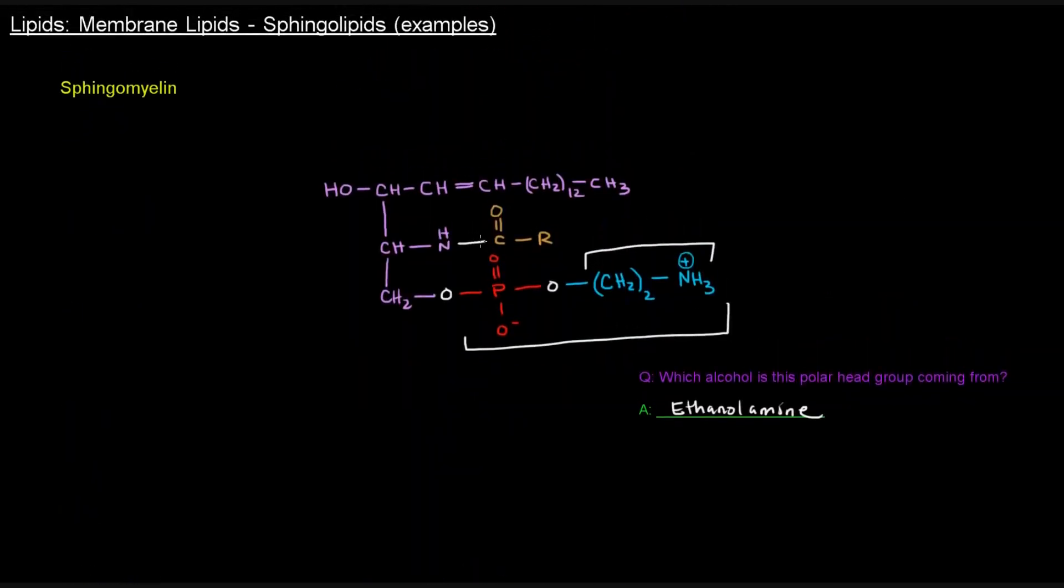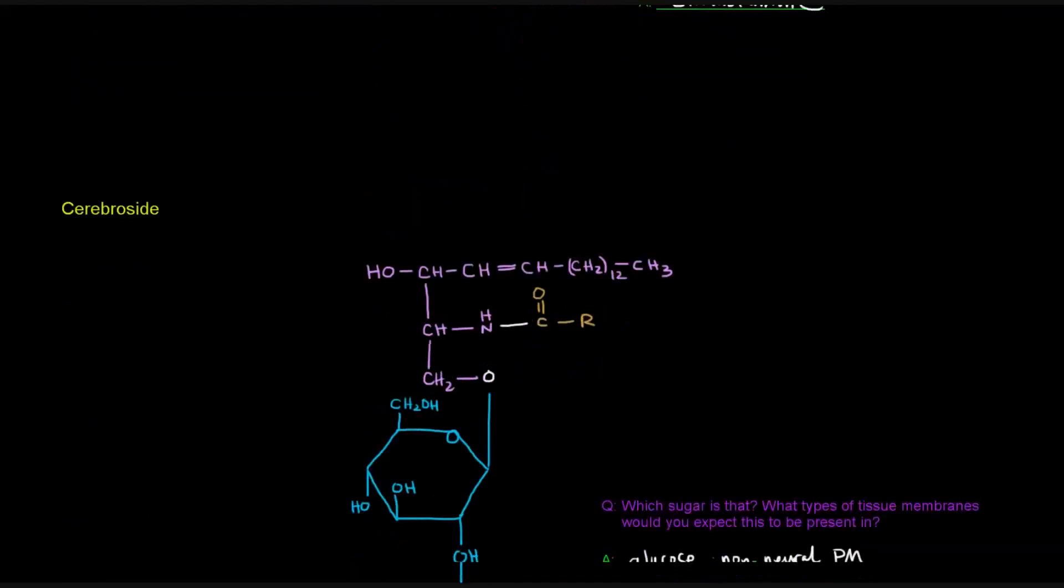Sphingomyelin does have charges. It has a negative charge here and a positive charge here. So overall it has a neutral charge, but if this alcohol portion was a different alcohol, then we might have a case in which we would have an overall charge.